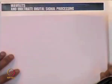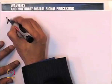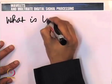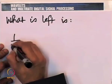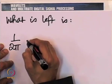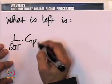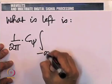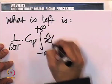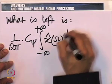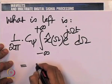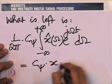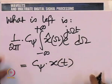If this can be done, then what is left is essentially (1/2π) times the constant c_ψ times the integral from −∞ to +∞ of X̂(ω) e^(jωt) dω, which is c_ψ times x(t). Simple and beautiful.